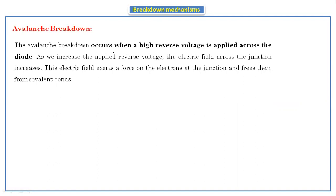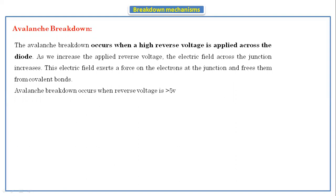The avalanche breakdown occurs when a high reverse voltage is applied across the diode. As we increase the applied reverse voltage, the electric field across the junction increases. This electric field exerts a force on the electrons at the junction and frees them from the covalent bonds. Avalanche breakdown occurs when the reverse voltage is greater than 5 volts.